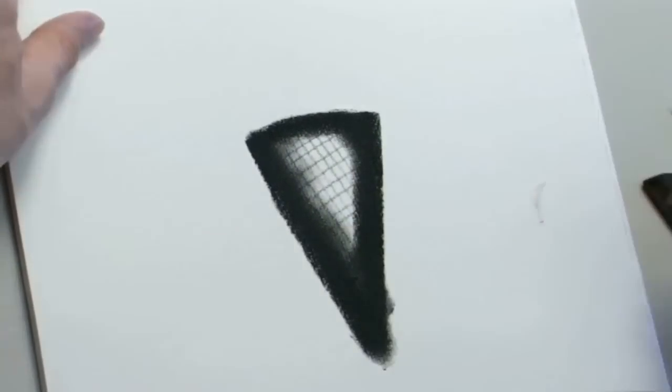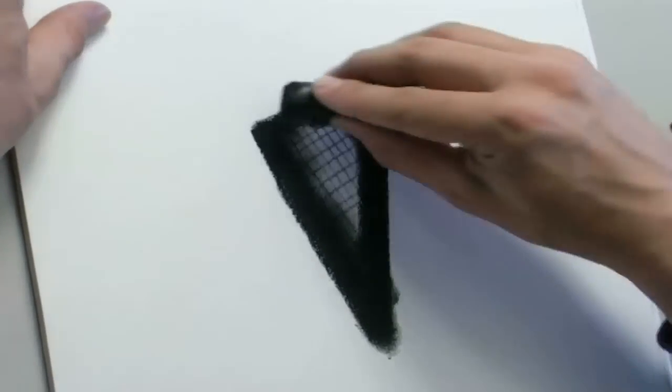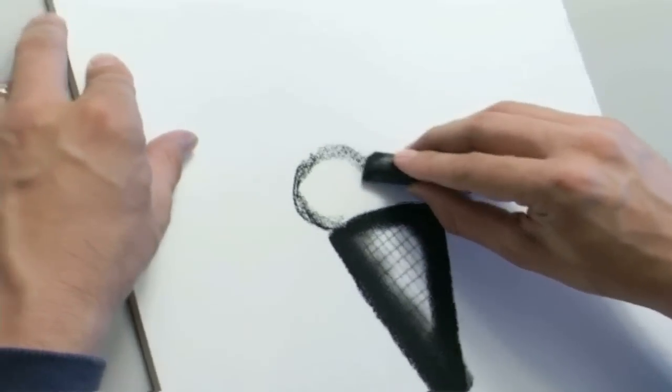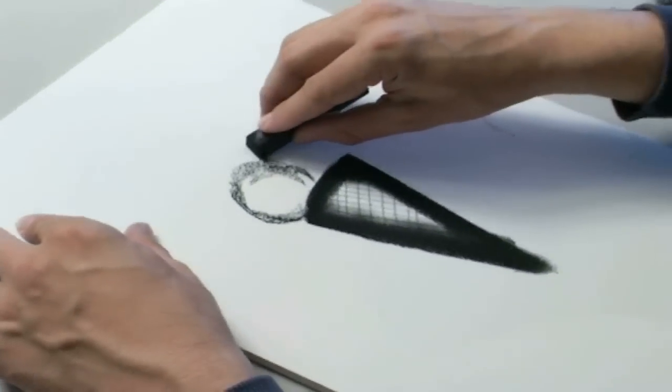Chunky charcoal from Cretacolor is an extra thick compressed charcoal with broad, jet black strokes. Its large size makes it comfortable to hold and is well suited for large designs and sketches.